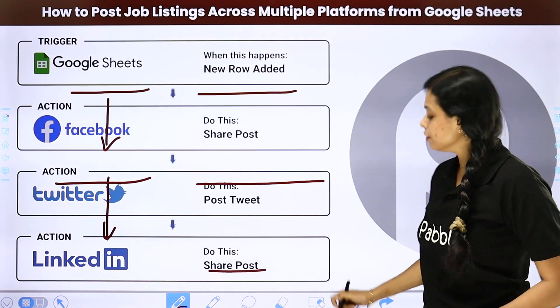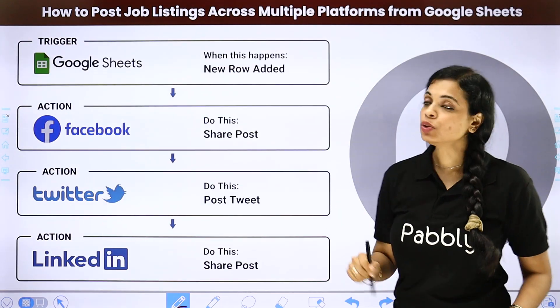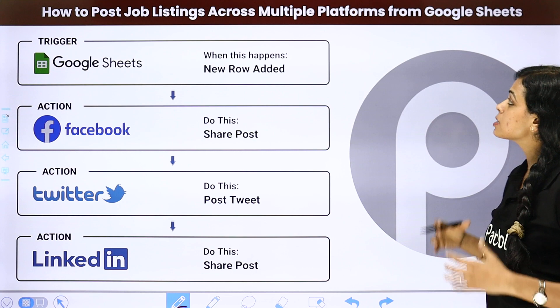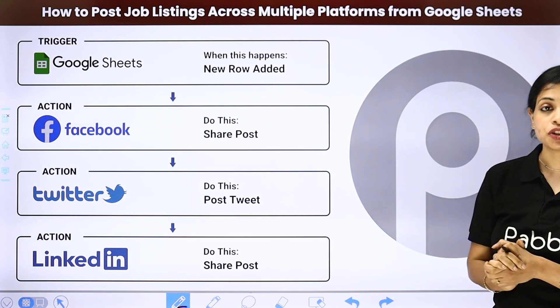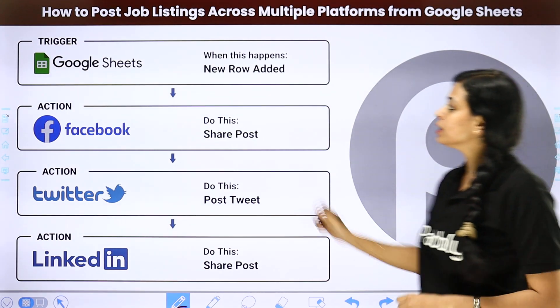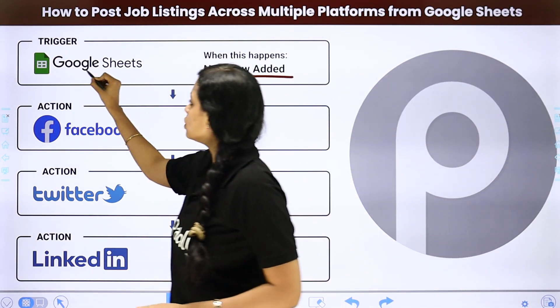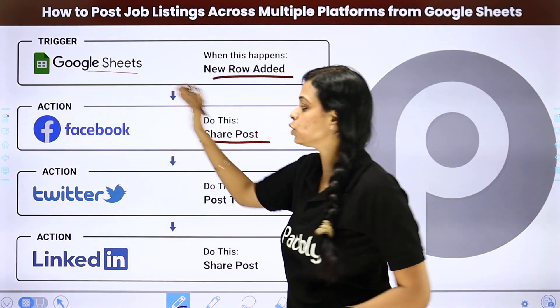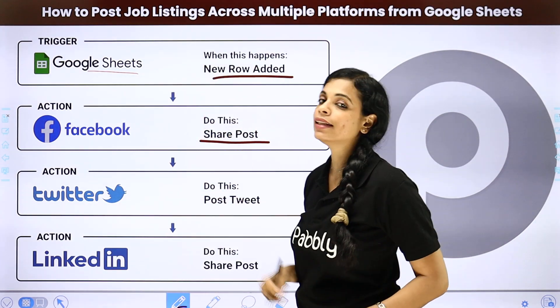The last example is how to post job listings across multiple platforms from Google Sheet. Every time a new row is added in Google Sheet, the post is automatically shared on Facebook, then Twitter, and then LinkedIn.